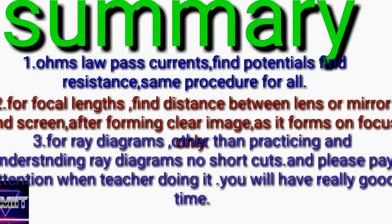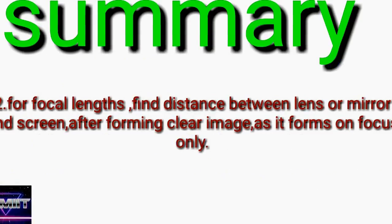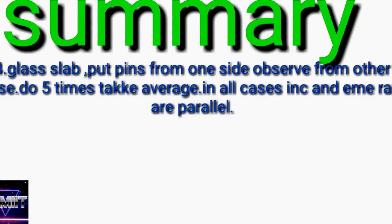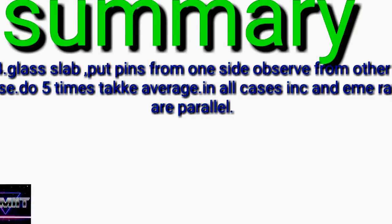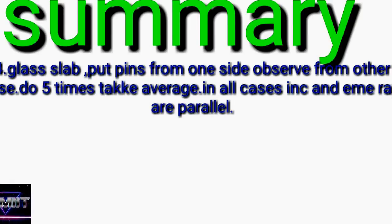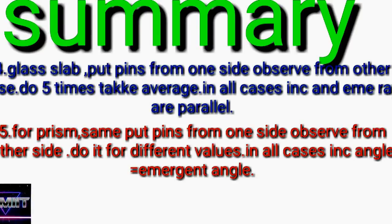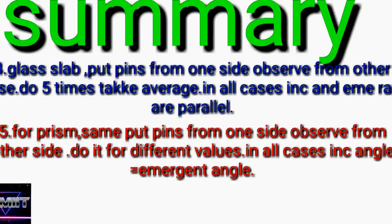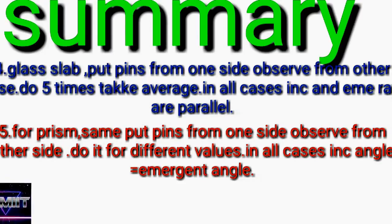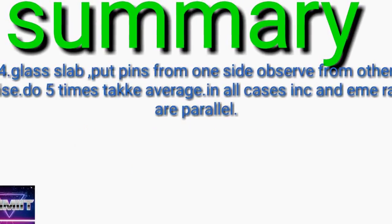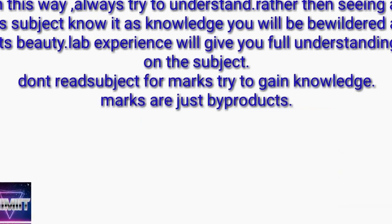Coming to the fourth experiment — the glass slab experiment. Keep pins on one side, see from the other side — the incident ray will be parallel to the emergent ray. Do it five times between 30 to 60 degrees incidence angle. For the prism experiment — put pins on one side, see from the other side, draw the incident ray and emergent ray. Angle of incidence equals angle of emergence. Do it five times, take the average value between 30 to 60 degrees — all times the incident angle will equal the emergent angle.